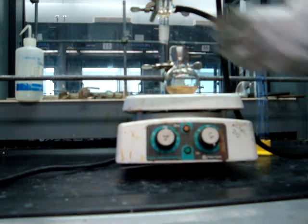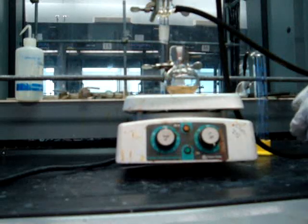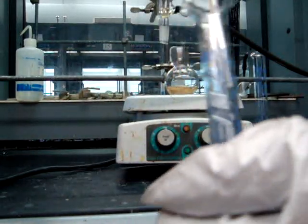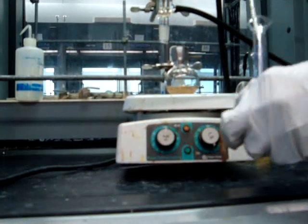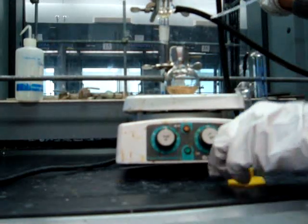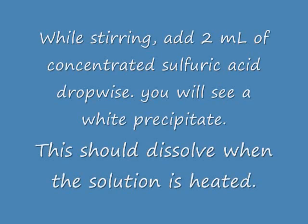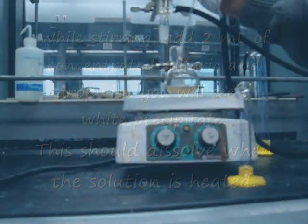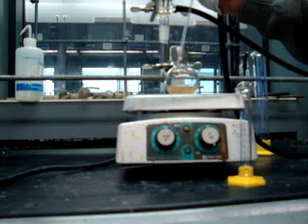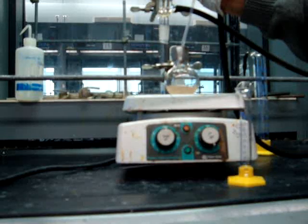Now you will be adding 2 milliliters of concentrated sulfuric acid dropwise. You want to make sure that you are very careful with the sulfuric acid by wearing gloves, and make sure that you are pipetting away from yourself at all times. You will see a precipitate that forms upon the addition of sulfuric acid, and this should dissolve when the solution is heated.